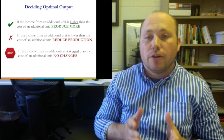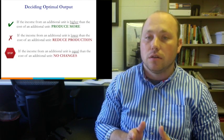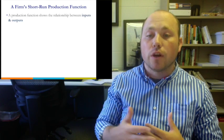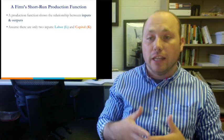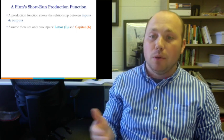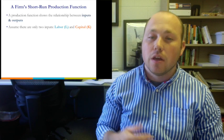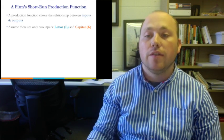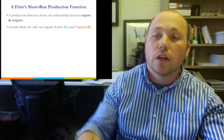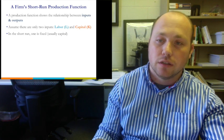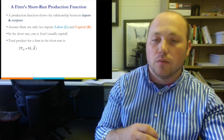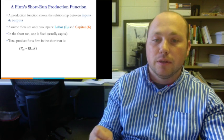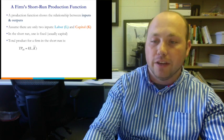Our short-run production function shows the relationship between inputs and outputs. We use two inputs: labor and capital. Because this is labor economics, we hold capital fixed and look at how output changes when we change labor. We can write the production function as: total product equals a function of labor, holding capital fixed.